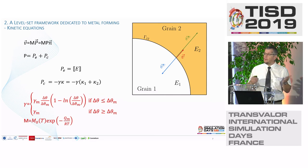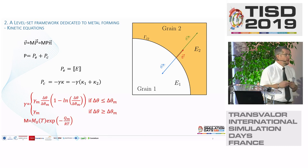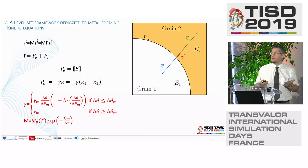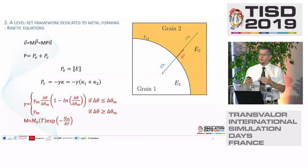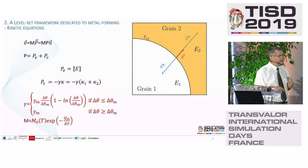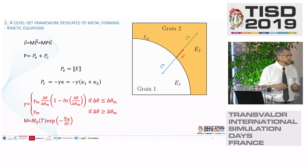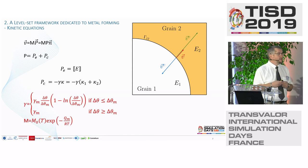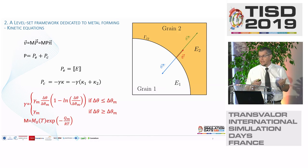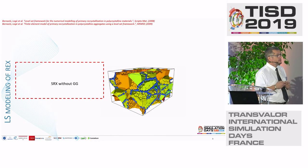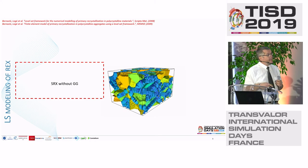It is a hot topic both experimentally — using 3D experimental data to clearly define these coefficients — and numerically, because when you want to introduce anisotropy into the simulation it becomes much more complex. Today in Digimu we use isotropic definitions of these parameters depending on temperature, but the future is to take into account misorientation, the normal to the grain interface, and other parameters like grain boundary mobility anisotropy.